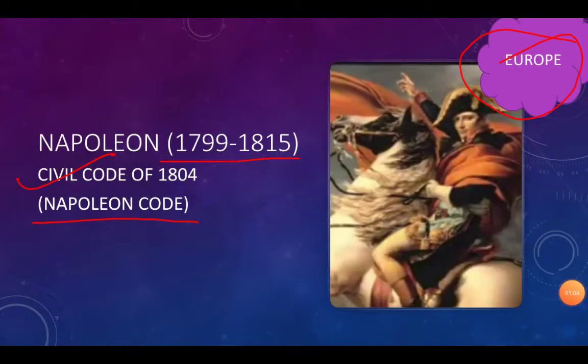When all this was starting in France, Napoleon made his entry. Napoleon's life span was 1799 to 1815, and he came to France with a dream to conquer the whole of Europe. For that, he implemented the Civil Code of 1804, which we also call the Napoleon Code or Napoleonic Code.